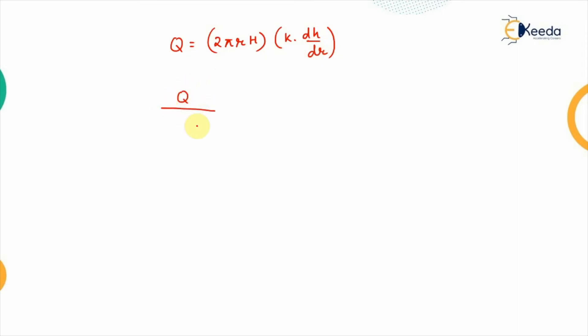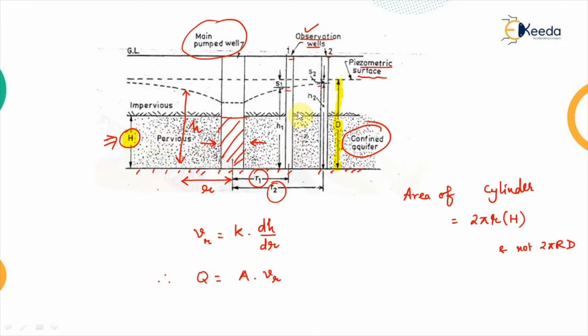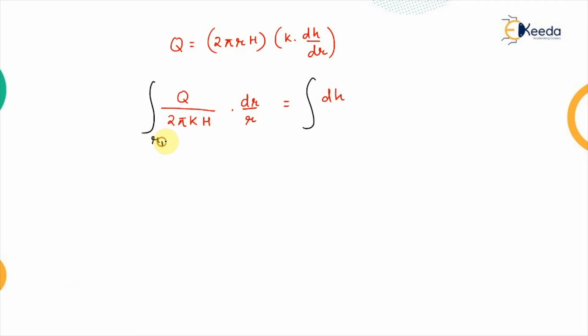Again, here it will be q upon this is constant that is 2πkh dr upon r that is equal to dh. Now, we will integrate both sides since for the observation well we can see that this piezometric surface that is having the different piezometric head corresponding to radius r1 it is h1 and corresponding to r2 it is h2.